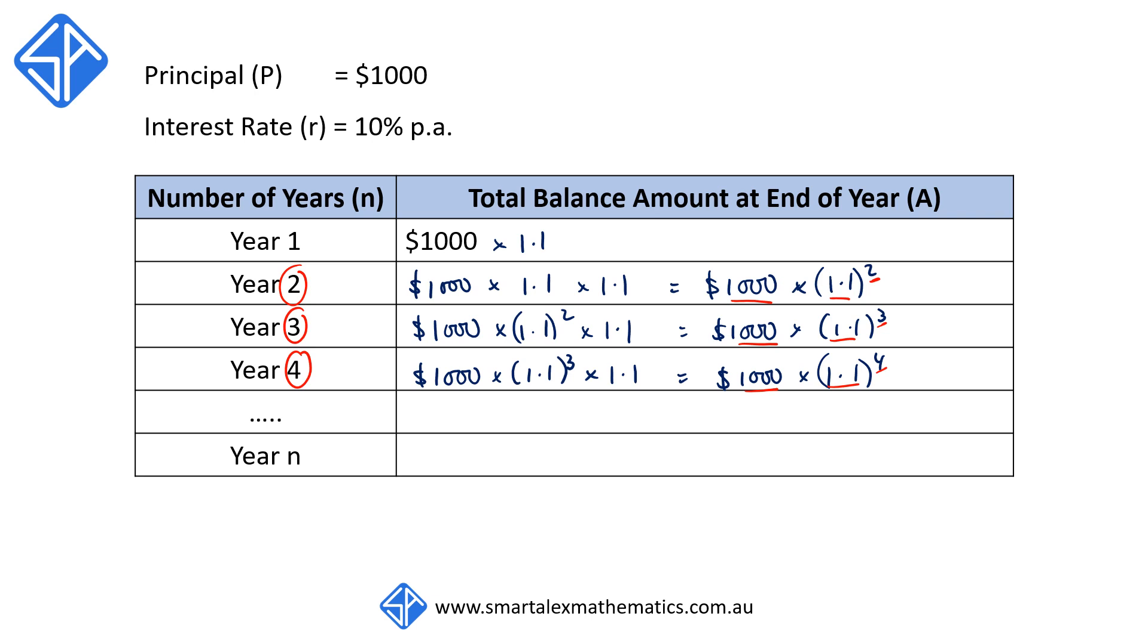So we can generalize this to year n. In year n, we're going to then have a balance of 1,000 times 1.1 to the power of n.